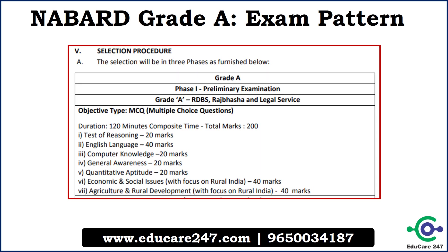Let's talk about the exam pattern. The exam pattern is the same as the previous year. The Phase 1 examination will be for 200 marks and one will be given 120 minutes, which means 2 hours. It will have sections on English, computer awareness, reasoning, general awareness, quantitative aptitude, economic and social issues with focus on rural development, and agriculture and rural development with focus on rural India. Rural development and rural India is the core, and the ARD and ESI sections are very important because they comprise 80 marks.